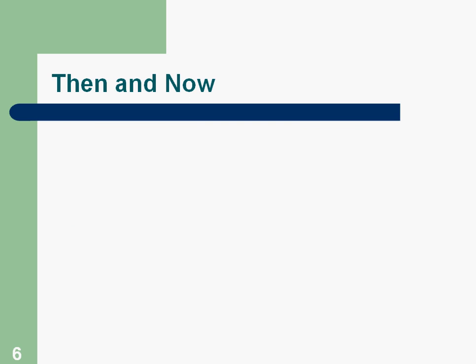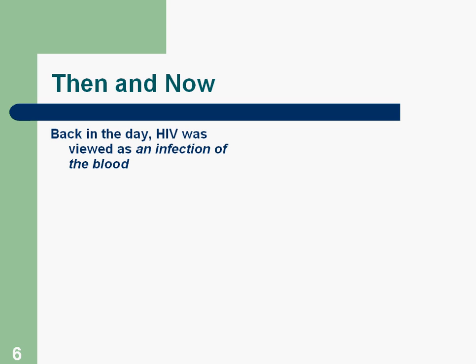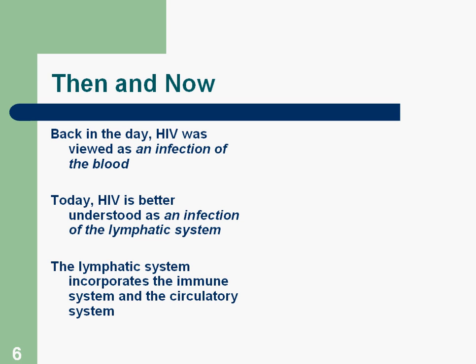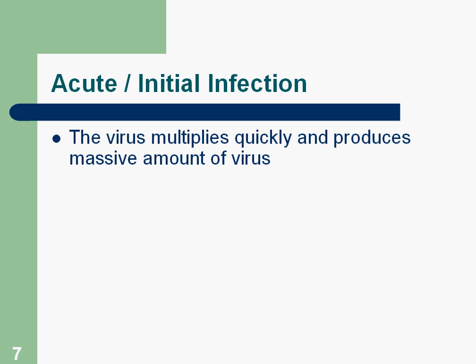Back in the day, HIV was viewed as an infection of the blood — something only part of the blood. Today we understand it better to be an infection of the lymphatic system. The lymphatic system, just like lymph nodes, is like the highway between all of the lymph nodes, and it incorporates both the immune system and the circulatory system. So HIV really is an infection of that system rather than just the blood.